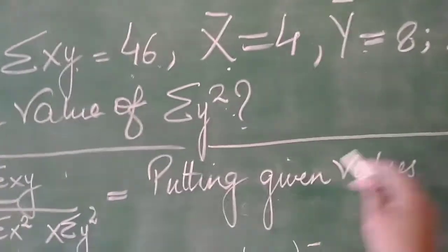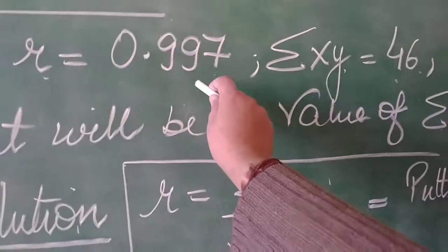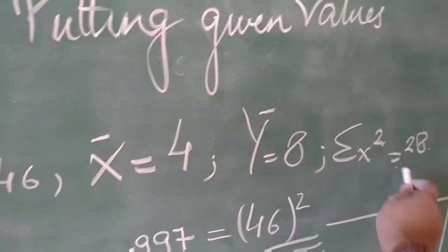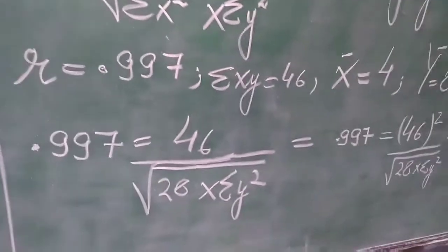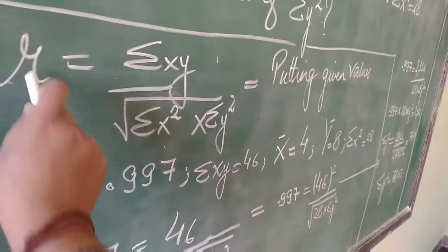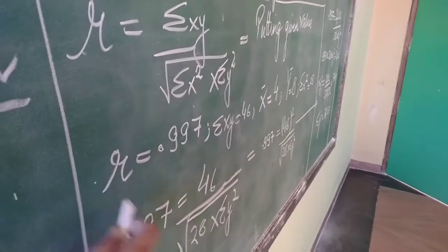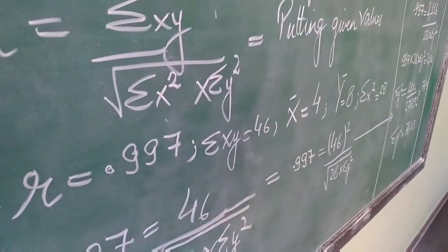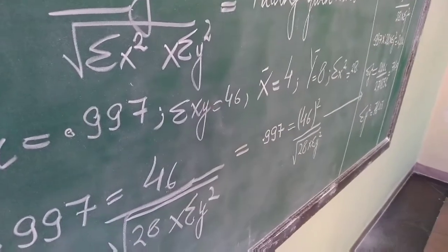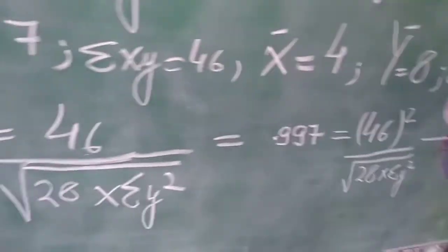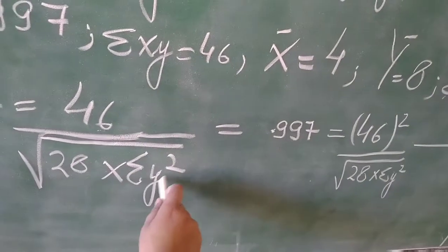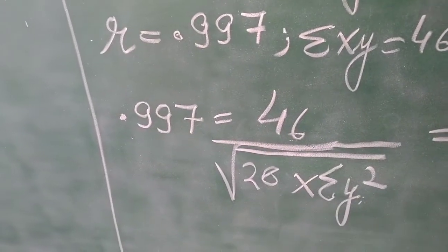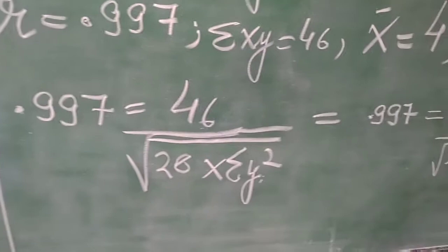Let's start putting the values which are delivered to us. 0.997 I have written, then 46 is given, then we have x square 28. So r is 0.997, summation xy is 46, summation x square is 28, but I don't have y square so I will calculate y square. Now look how it will take you with it.